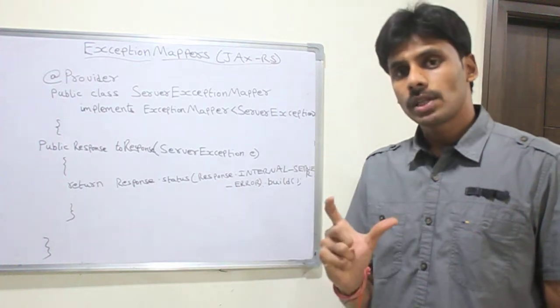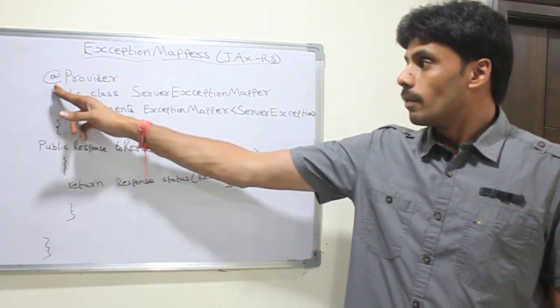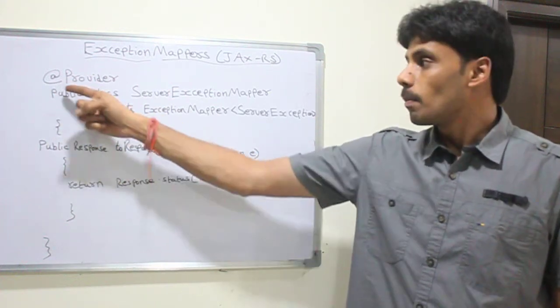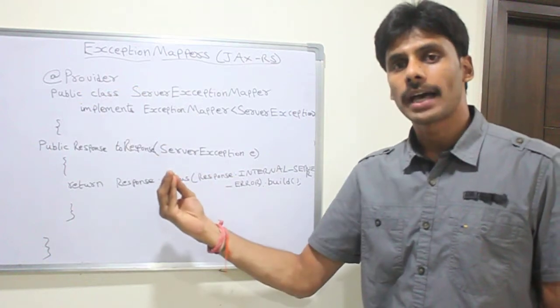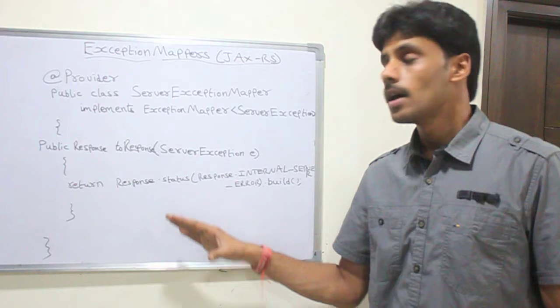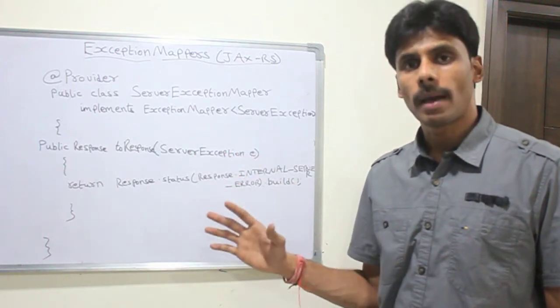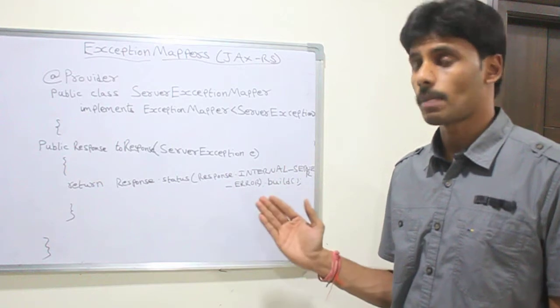For each exception, we will be writing a mapper. We mark the mapper class with a provider marker or annotation which tells the JAX-RS implementation like Apache CXF or Jersey that this particular component is an exception mapper or this is a RESTful component which is an exception mapper.